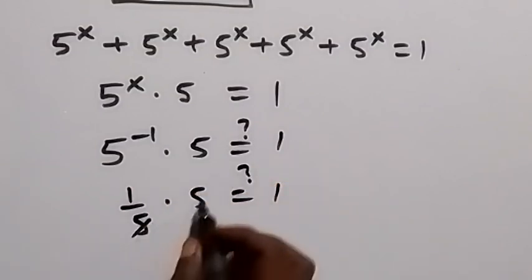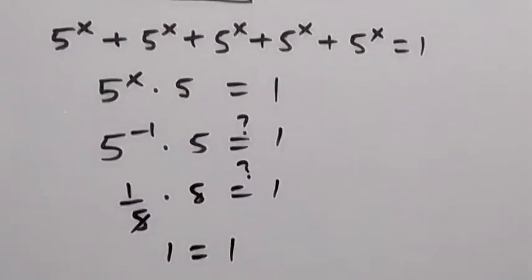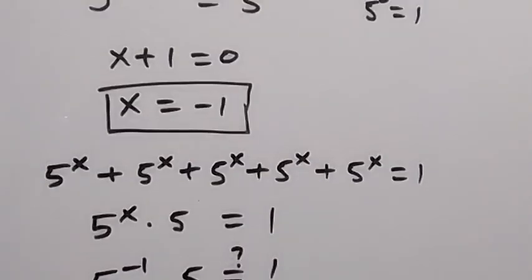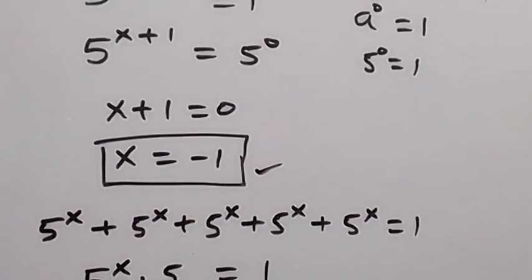Yes, of course, when the 5s cancel each other, 1 equals 1. From here we have seen that the left hand side equals the right hand side, and we can now conclude that x equals minus 1 is the solution to this problem. Thank you for watching, please share this video, subscribe to my channel, and turn the notification bell on. See you in the next class, bye for now.